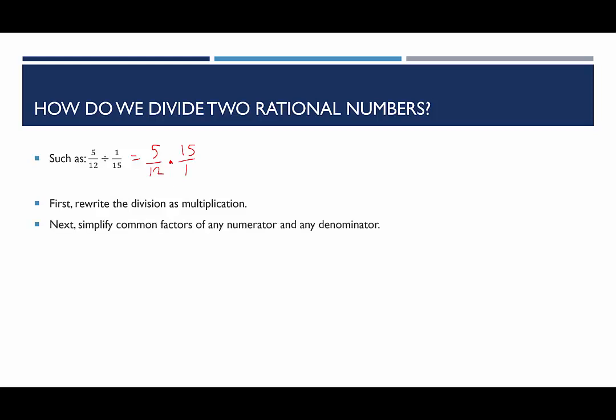Next, we're going to simplify common factors of any numerator with any denominator. So 5 has nothing in common with 12 or 1 besides 1. 15, however, has a common factor with 12 — they're both divisible by 3. So 3 goes into 15 five times, and 3 goes into 12 four times. Now, it might be tempting to say there are two fives, but they're both numerators, so we don't simplify two numerators because that's not going to balance out.